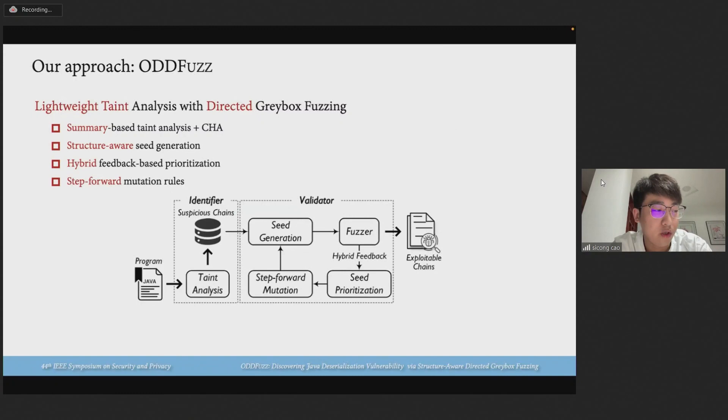To address these challenges, we propose a novel hybrid solution, ODDFuzz. In particular, our approach performs a lightweight taint analysis to identify possible gadget chains. Then we adopt a novel structure-aware directed fuzzing solution driven by a step-forward mutation strategy and hybrid feedback to reach candidate vulnerabilities repeatedly.